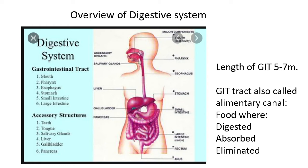The teeth help in grinding, chewing, and crushing food. The tongue adds lubrication, and salivary glands secrete digestive juices. The liver also secretes juices, the gallbladder secretes bile juice, and the pancreas secretes pancreatic juice. These juices collectively enter the small intestine for digestion. This is the overview of the digestive system — the gastrointestinal tract and the accessory structures.